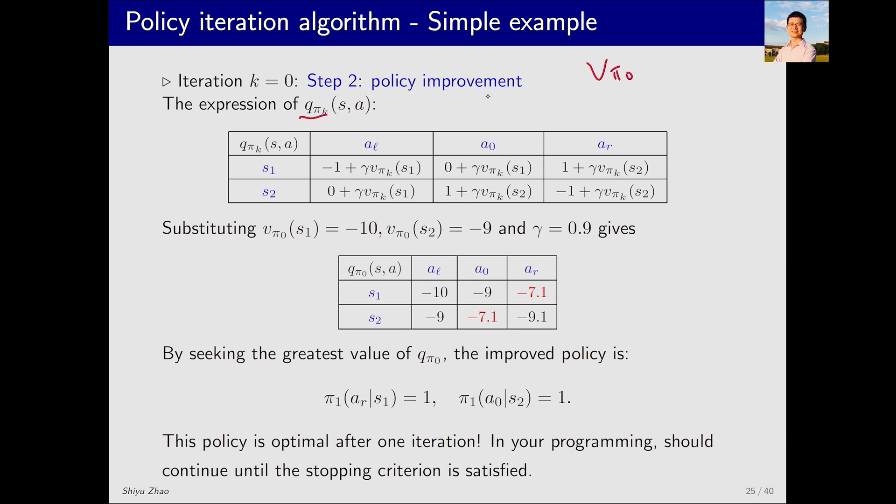Next, I need to calculate qπk, which in this case is qπ0. There's a relationship between qπk and vπk, meaning given vπk, I can calculate qπk. Having already solved for vπ0, I substitute its specific values into this table, which allows us to get the values of qπ0. The next policy, π1, is straightforward to obtain. I look at which qπ0 is the largest in this table. This is the largest, so I choose ar for s1. For s2, a0 is the largest, leading to the selection of a0. This results in a new policy. By plotting this policy, we see that this policy is already optimal. Why? In s1, it chooses to move right, and in s2, it remains stationary. Since this example is very simple, we can reach the policy using just one iteration.